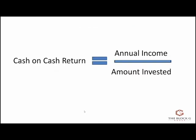Here at the Block G Group, going back to our formula, we strive for a 7% cash-on-cash or better on our investments. You'll see this in our prospectuses when we come out with a new opportunity — that's one of several metrics we use to judge a good deal. We say we need a cash-on-cash of 7% or better to proceed forward with this investment. It gives you a gauge, along with the other metrics we use, to say: is this a good deal for the investors or not?